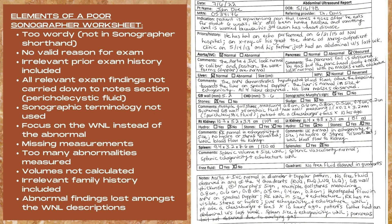Now let's look at the priors and history section. It lists: an echo performed on 6-21-15 at Northwest Hospital; an x-ray of his great toe done at Mercy Outpatient Clinic on 5-14-13; and his father just had an abdominal ultrasound last week. Note that none of these are relevant to the exam at hand. An echo, an x-ray of the great toe, and the father's abdominal ultrasound all have nothing to do with this patient's abdominal ultrasound.